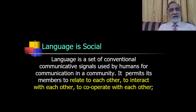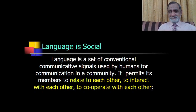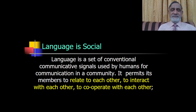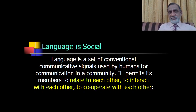The second characteristic is that language is social. Language is a set of conventional communicative signals used by humans for communication in a community. In that sense, language is a social tool — it permits its members to relate to each other, to interact with each other, and to cooperate with each other. When people want to communicate, express themselves, express a need, or explain something, they use language.